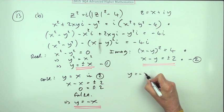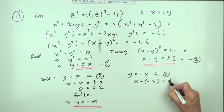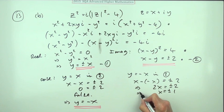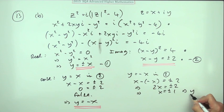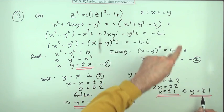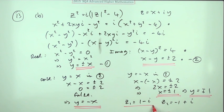Solving the simultaneous equations by cases: if y = x, substituting into x − y = ±2 gives 0 = ±2, which is false. So y must equal negative x. Substituting into x − y = ±2 gives 2x = ±2, so x = ±1, and the corresponding y values are y = ∓1. Writing the solutions: z₁ = 1 − i and z₂ = −1 + i. That's the final mark.